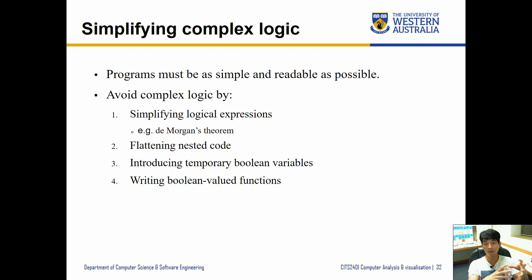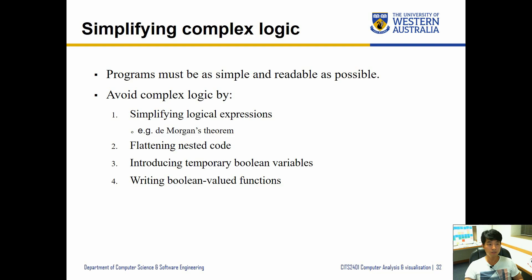We've seen flattening nested code in the previous video — pulling out conditions from inside an else statement and placing them as an elif condition. We can also introduce temporary boolean variables to check whether conditions are true or false, rather than combining multiple boolean variables. And we can write boolean-valued functions, which we might cover at the end of the lecture.